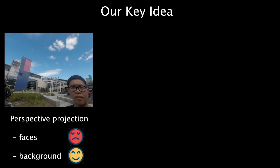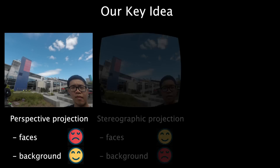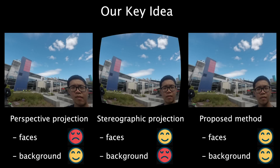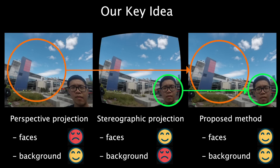Our approach is based on the following observation. While the perspective projection makes the background look good, the faces near corners are often squished. On the other hand, the stereographic projection makes faces look natural but distorts straight lines. Therefore, our key idea is to locally apply the stereographic projection to face regions, and apply the perspective projection to the background.